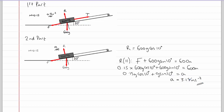A lot of the time when we work out a deceleration, it comes out negative. The reason this answer isn't negative is that we chose down the slope to be positive. Since the particle is moving up the slope, the acceleration is in the opposite direction to the velocity — it must be decelerating.